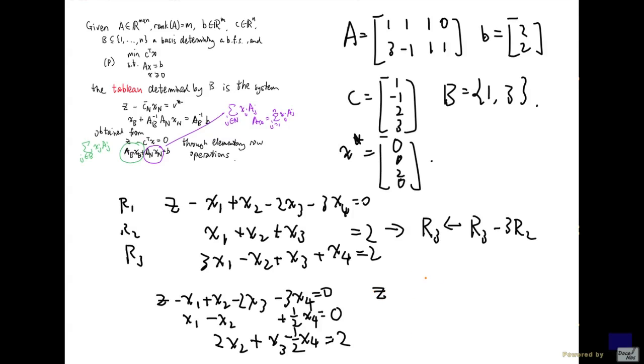And that will give me z plus 4x_2 and then minus 7 over 2 x_4 equal to 4. And then this is my tableau determined by the basis B.